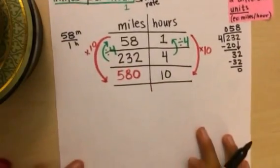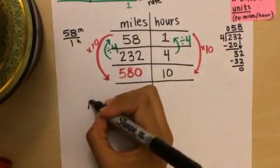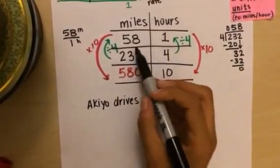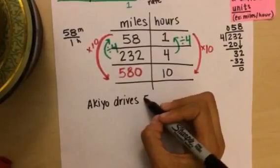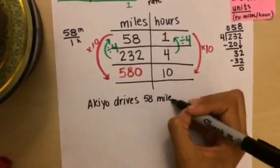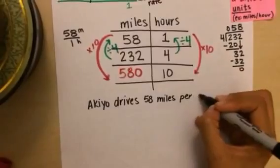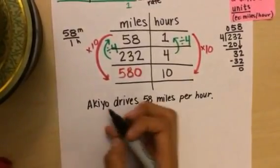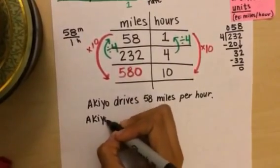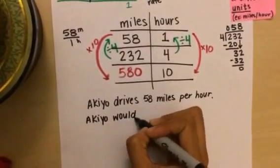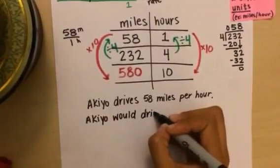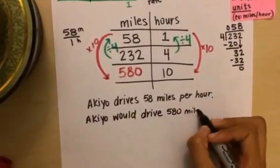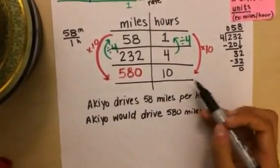So our answer would be that Akio drives 58 miles in one hour. Or we could say miles per hour. And the second part of our question, we now know that Akio drives 580 miles in 10 hours.